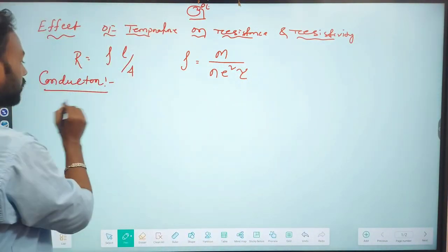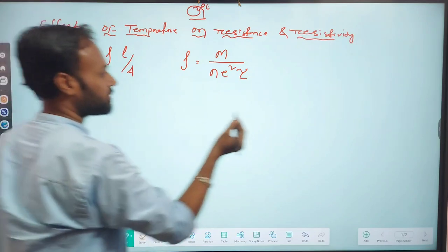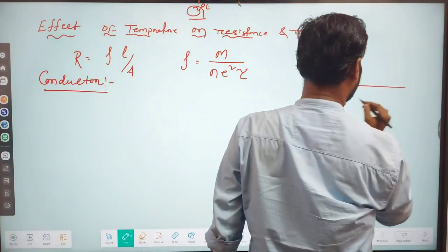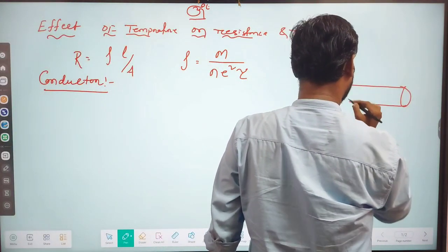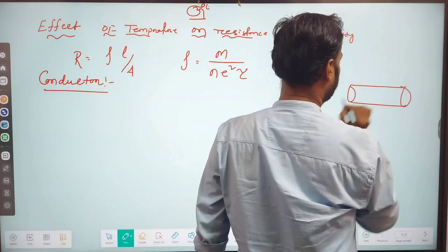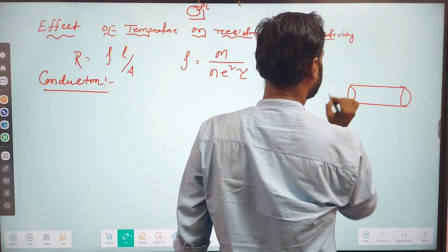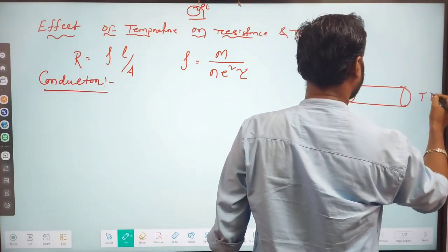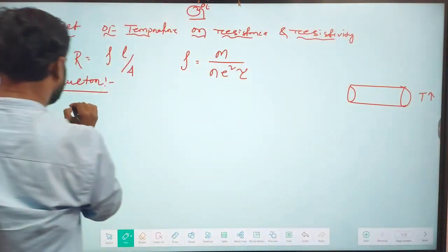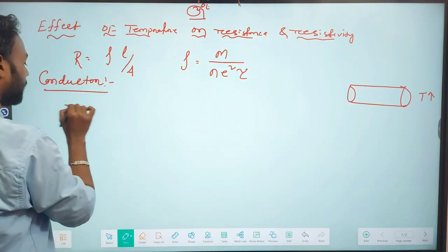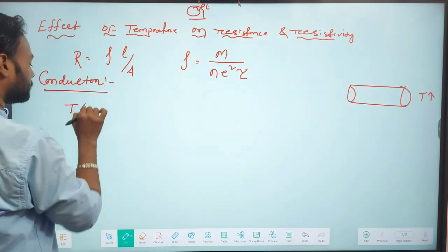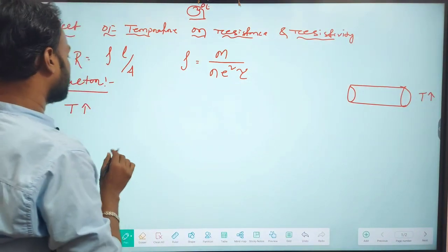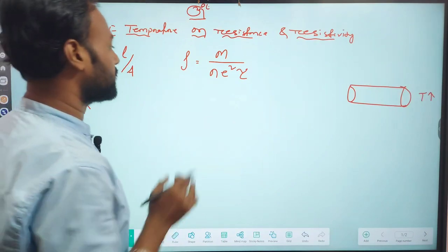Suppose this is the conductor. The conductor is given heat — that is, temperature. When we increase the temperature, we see the effect on resistance and resistivity.